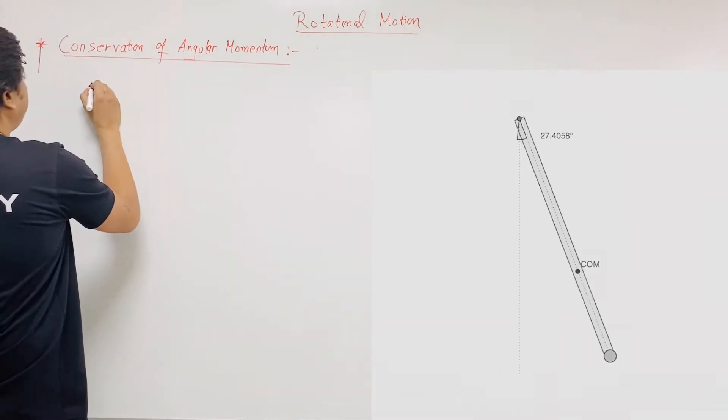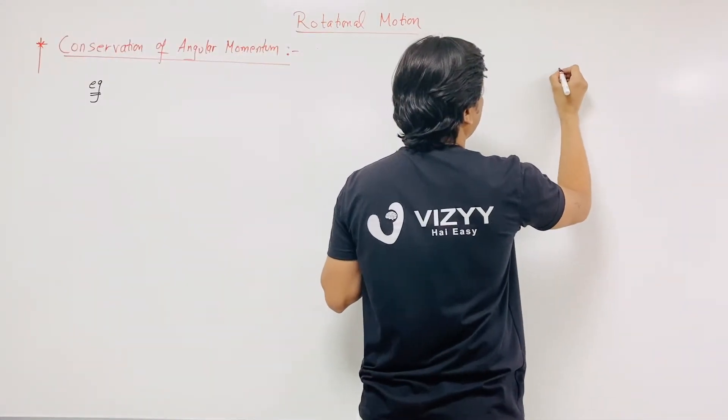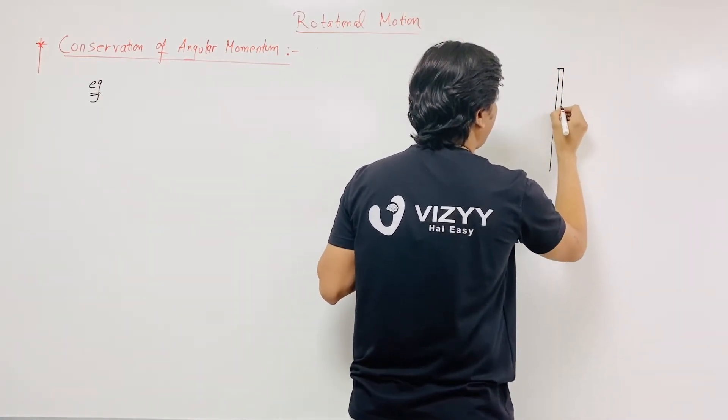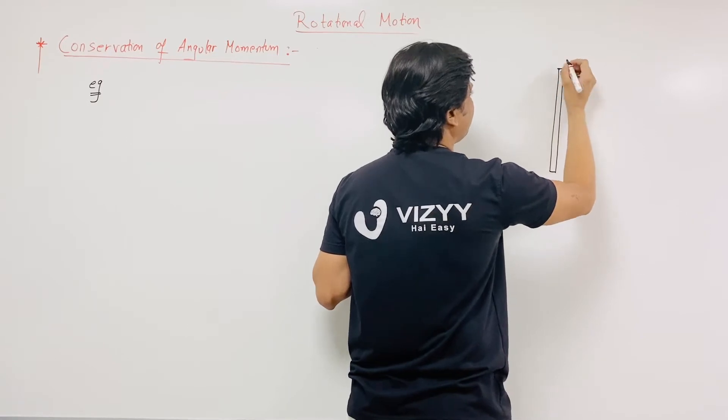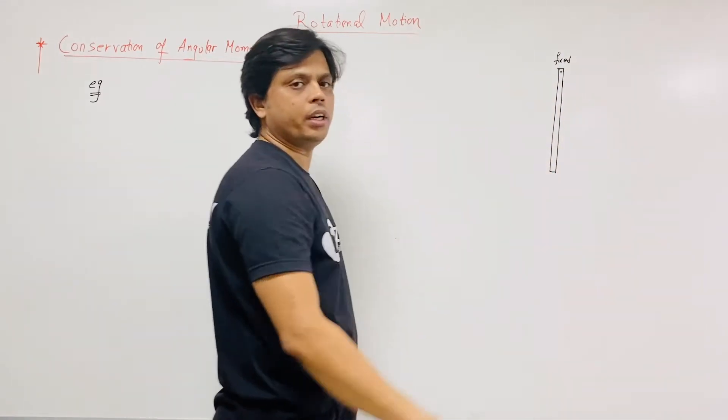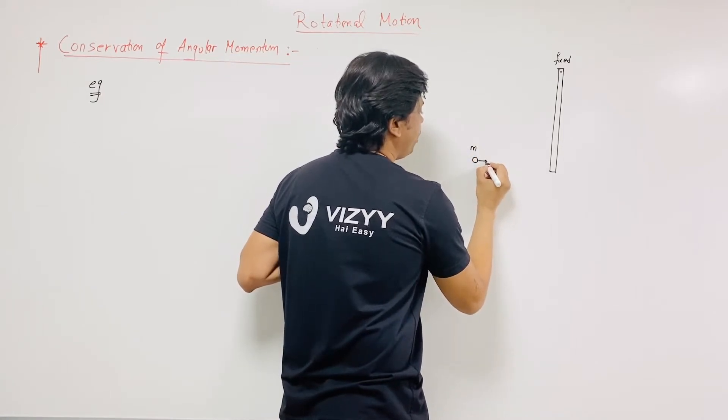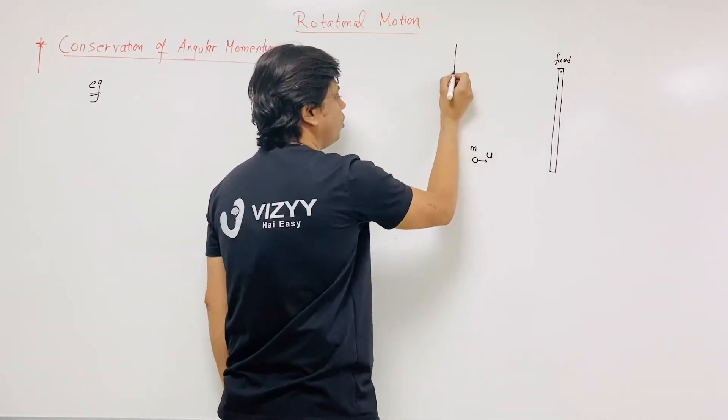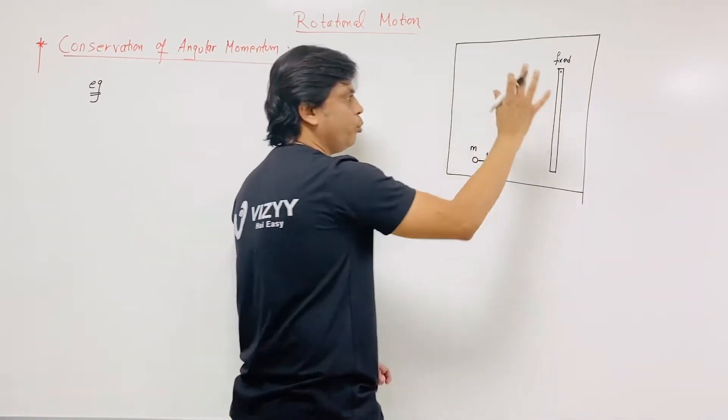So in this example, just in animation here there is one rod which is fixed at one end but it can rotate freely. Okay so this rod can rotate freely at this end. Here there is one ball of mass m which is moving with velocity u horizontally in this direction. Here we are considering this to be a whole system.